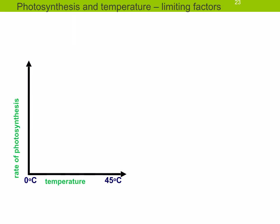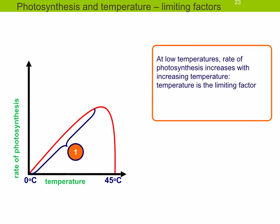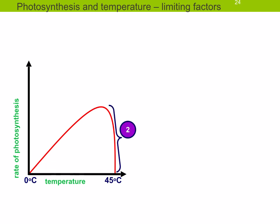If you were to draw a graph, you'd have temperature on the x-axis and rate of photosynthesis on the y-axis. Remember that enzymes are involved in this process. At a very high temperature, enzymes will become denatured — they denature after their optimal temperature. As you increase the temperature, the rate of photosynthesis increases, so at low temperatures, temperature is the limiting factor. Then the graph drops down because the enzymes are becoming denatured, and the rate of photosynthesis will eventually become zero.